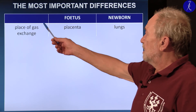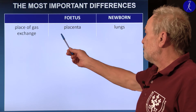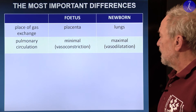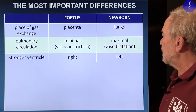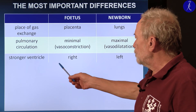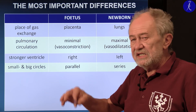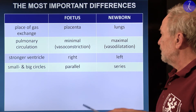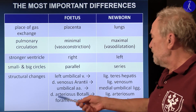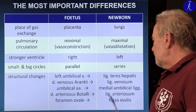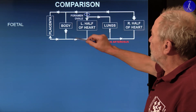Just a couple of things to summarize. The biggest differences between fetal and newborn circulation: gas exchange takes place in the placenta in the fetus, and in the lungs after birth. Pulmonary circulation is almost absent during fetal life and maximal due to vasodilation in the newborn. The right ventricle works much more than the left during fetal life; the opposite applies in the newborn. The two circles — systemic and pulmonary — are coupled in parallel during fetal life and in series in the newborn. The structural changes have been mentioned before.